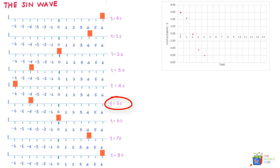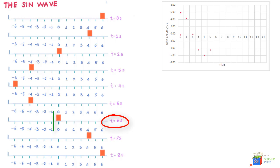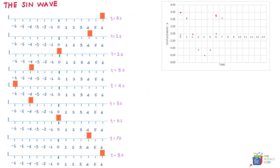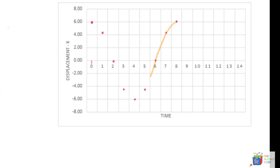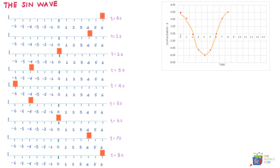At t = 5 seconds, it is again at minus 4.24 meters. At t = 6 seconds, it is at approximately the zero meter mark. At t = 7 seconds, it is at 4.25 meters, and at t = 8 seconds it is at six meters. Connecting these dots with a smooth curve, the graph looks like a sine curve — and you get exactly the same sine curve when plotting the position of the mass with respect to time.